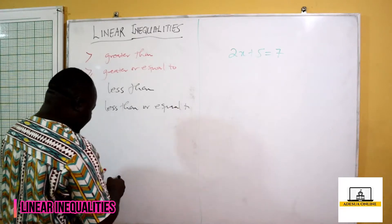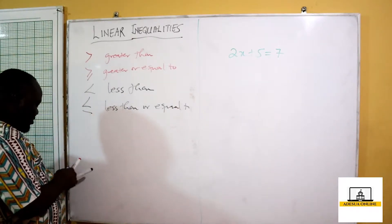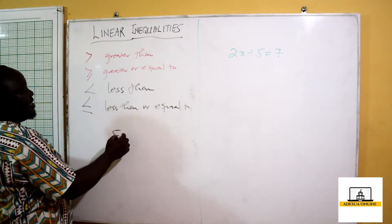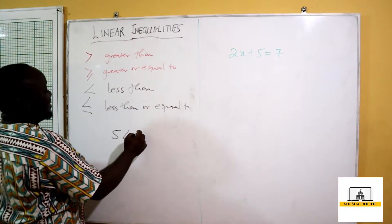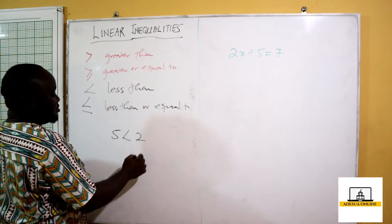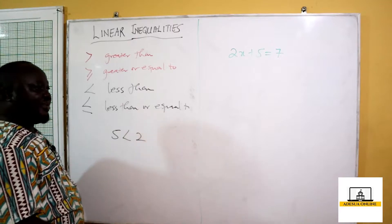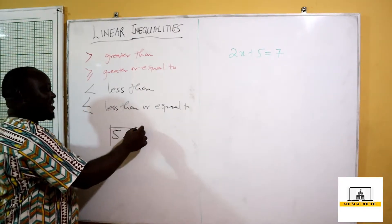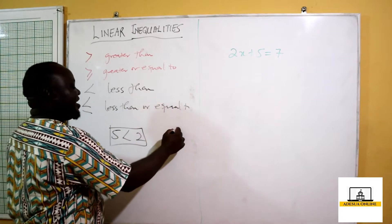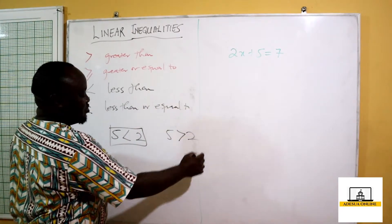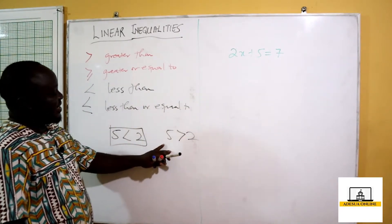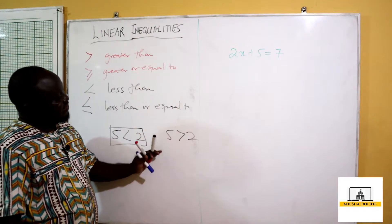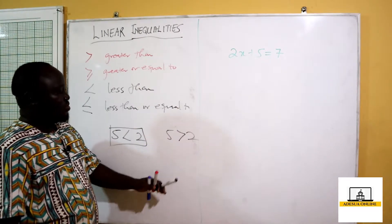So if I should write, let's say 5 is less than 2 — no, this is an invalid statement. So it should be 5 is greater than 2. So this is an inequality, with 5 being greater than 2.